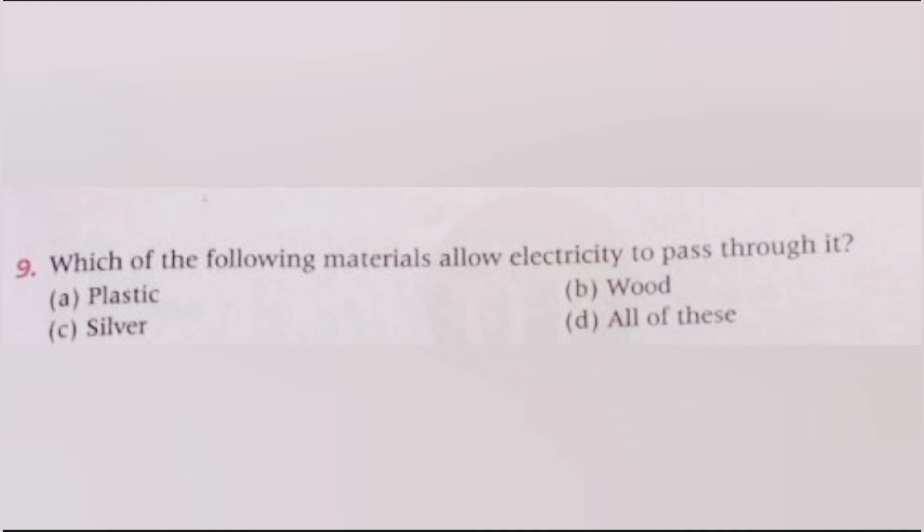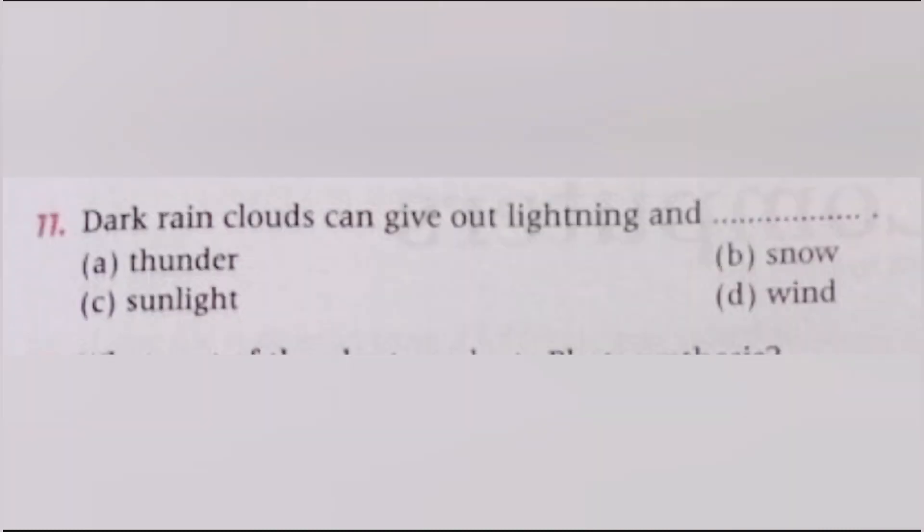Next, which of the following materials allows electricity to pass through it? Plastic, cloth, silver, all of these. The answer is C, silver. Next, the change of substance from the liquid state to the gaseous state is called: evaporation, condensation, sublimation, filtration. The answer is A, evaporation.